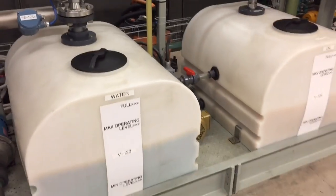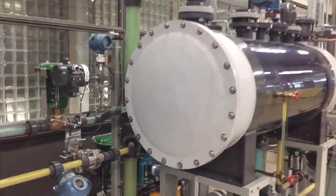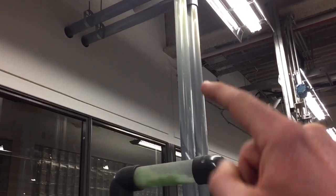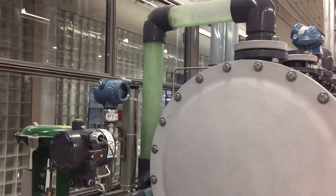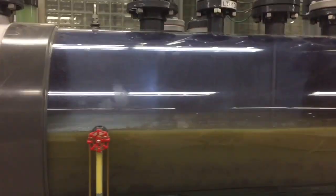These are our supply tanks, water and oil. They feed in, mix with our air coming in from our blower over here in our mechanical room beside us. Mix, come into the three phase separator.